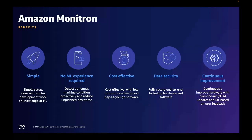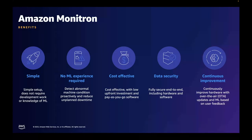Amazon Monitron is simple — you can install Monitron sensors and gateways using the Monitron app and start monitoring your equipment in minutes. Monitron automatically analyzes the data and sends you an alert when it detects abnormal machine conditions; no machine learning experience is required. You can detect machine issues before they occur — Monitron detects abnormal conditions in your industrial machinery and helps you take proactive actions and reduce costly and unplanned downtime.